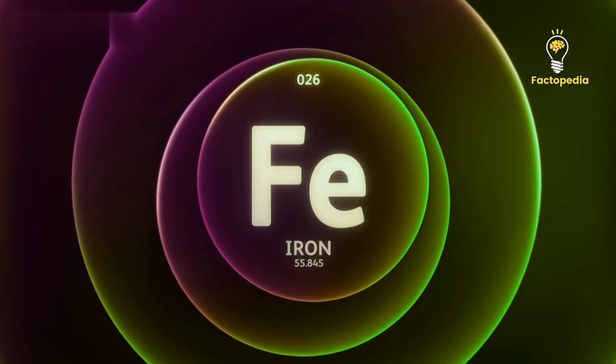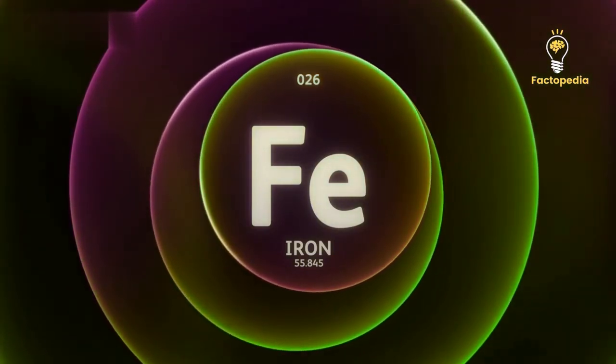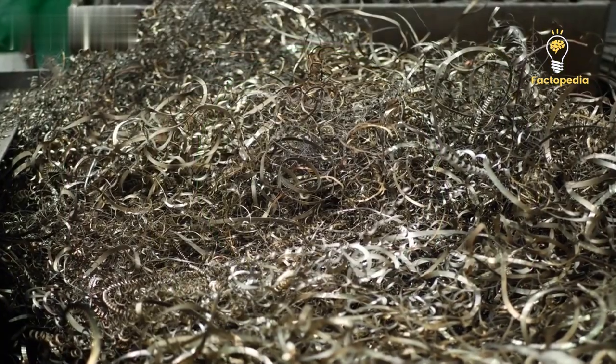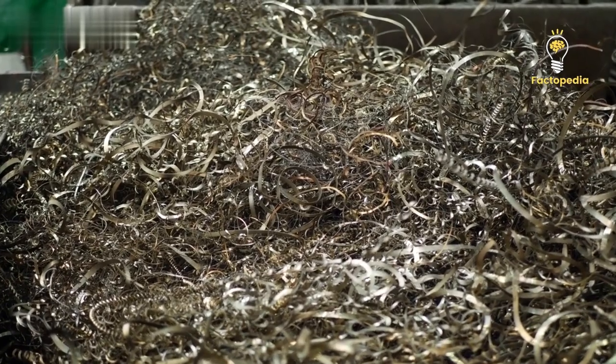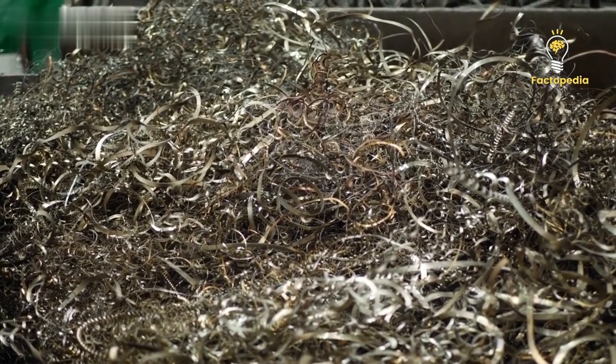When iron starts fusing in the core, it becomes unstable. Iron doesn't release energy when fused. It absorbs energy, leading to the star's ultimate demise.